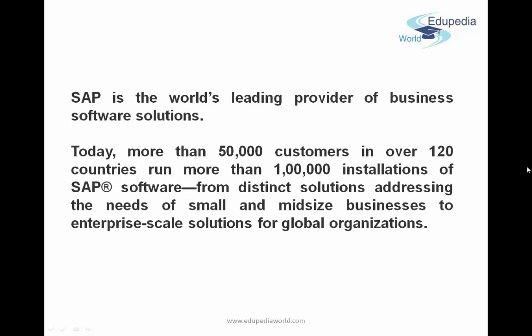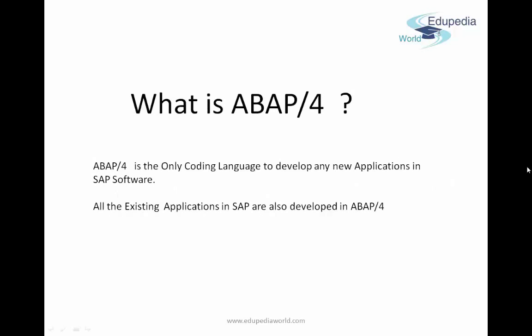SAP had no good competitor for 18 years. Its product is more than 40 years old and is completely developed, requiring only simple customization, enabling rapid implementation. SAP is the world's leading provider of business software solutions, with more than 50,000 customers in over 120 countries and more than 100,000 installations. Global organizations benefiting from SAP include BMW, American Express Bank, Nike, Coca-Cola, and Pepsi, among more than 50,000 brands worldwide.